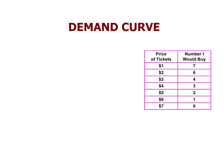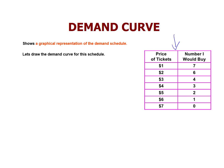A demand curve is a graphical representation of the demand schedule. The demand schedule is a table showing the relationship between price and demand. For example, a demand schedule for ticket prices: at one dollar I'd buy seven, at two dollars I'd buy six, at three dollars I'd buy four — as the price of tickets goes up, the number goes down. Let's now draw this demand curve.